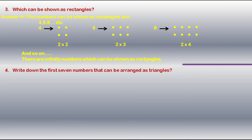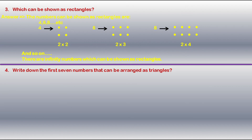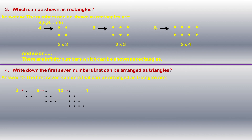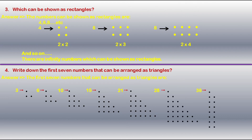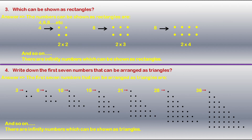The fourth question is: Write down the first seven numbers that can be arranged as triangles. The answer is: 3, 6, 10, 15, 21, 28, 36. As I mentioned at the start of this video, to find the next triangular number, just increase the base of the existing triangle by one extra dot, and you will get the next triangular number.